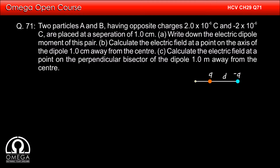For part B, the distance of the point where the electric field is to be calculated is 1 cm from the center. This distance is equal to the distance between the two charges. The formula for electric field due to dipoles can be applied only when the distance to the point is very large compared to the separation between the charges. At comparable distances, we have to use Coulomb's law to find the field.